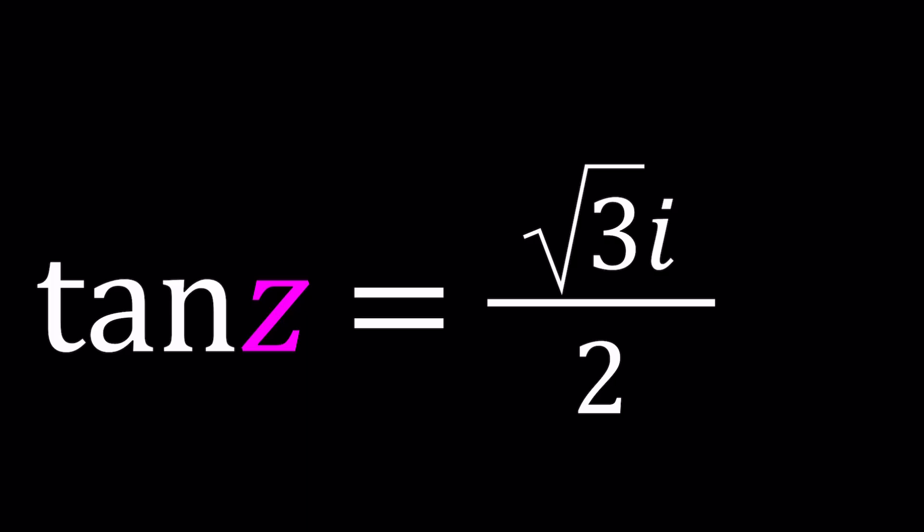We have tangent z equals square root of 3i divided by 2 and we're going to be solving for z values. Now let's take a look at this equation. First of all, can the tangent of an angle be imaginary or complex? Since this channel deals with complex numbers, everything is possible. So to be able to solve for z, we could use the arc tangent function. But what is arc tangent of square root of 3i over 2?